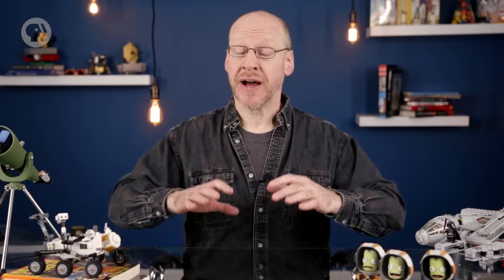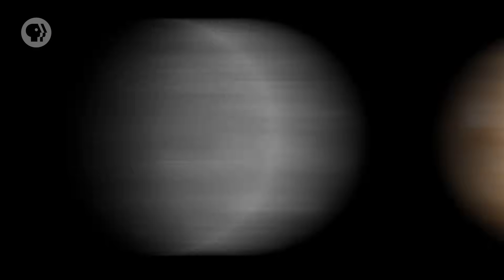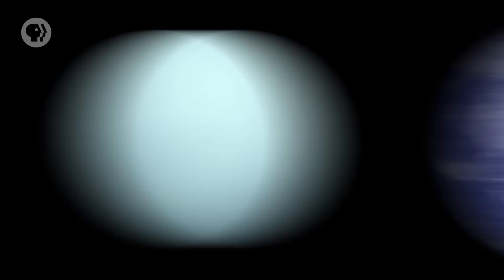Our Sun is orbited by a lovely array of planets, and they're wildly diverse. Big, small, airless, rocky, gaseous, hot, cold, and more.